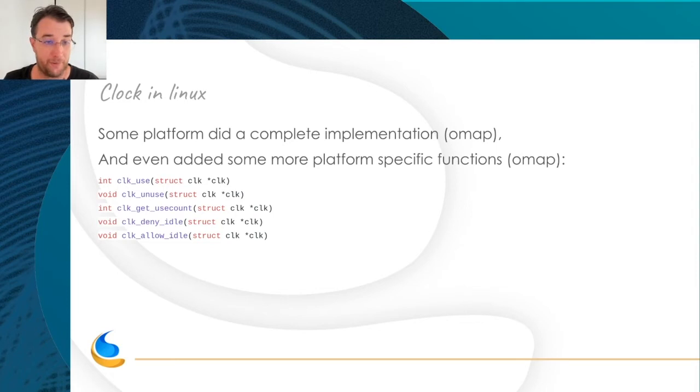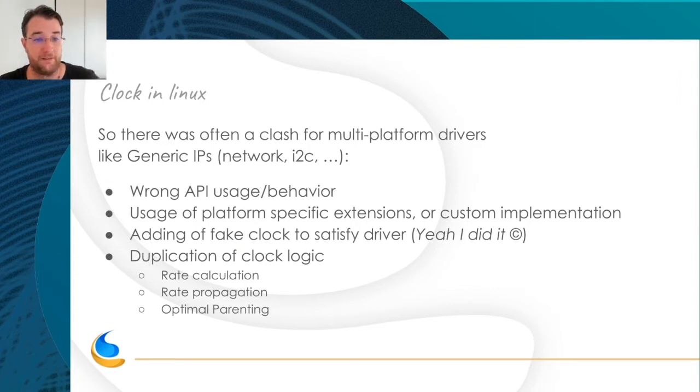For example, OMAP did a complete implementation. You could change parent, you could set PLL, clock set rate. Go through the tree to set the rate to the parent and so on. They did a great job. It was not enough. They added some custom functions like clock use, unuse, use count, which was needed for their use case, which was missing from the initial clock.h.